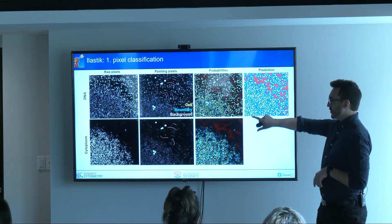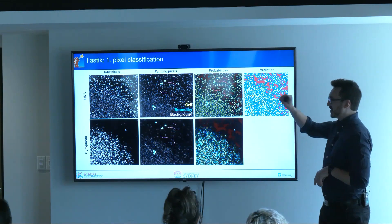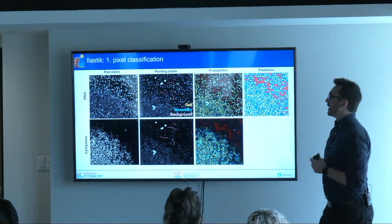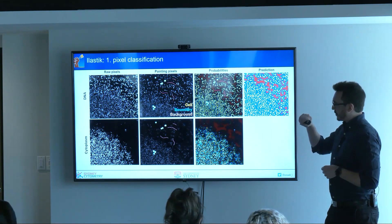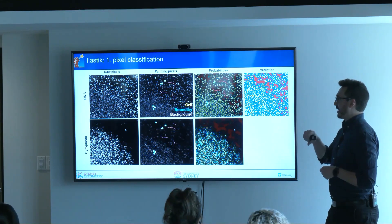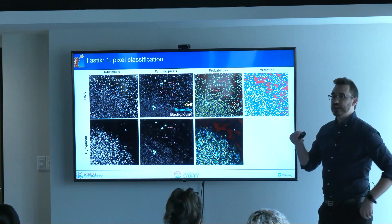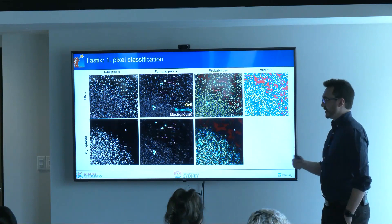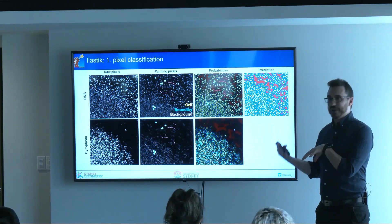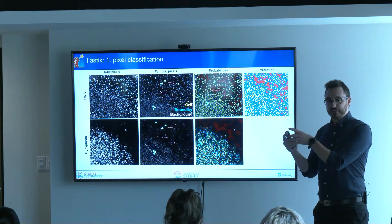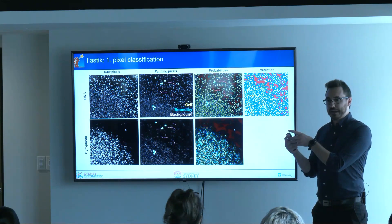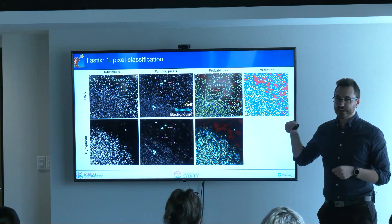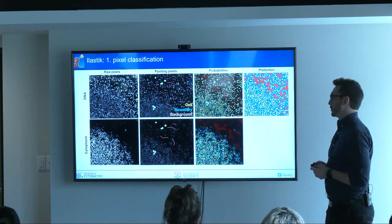We take the raw data and paint on layers in a program called Ilastik. We create a cell coloring in yellow, a boundary in blue, and background in red. We don't actually need a cell label — we need something where the cell is a different color to the background — but the principal thing is we're identifying the border between each cell as accurately as possible.